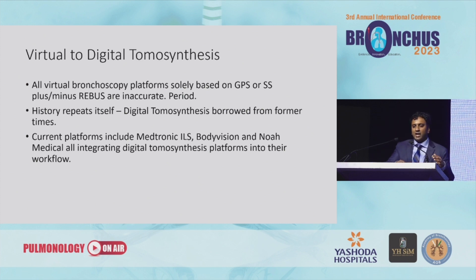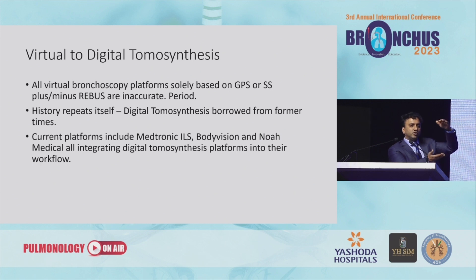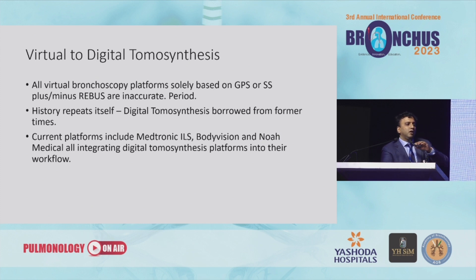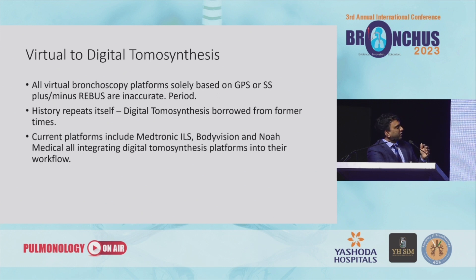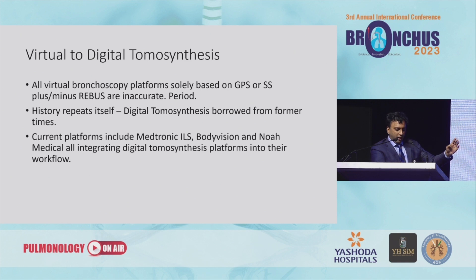With digital tomosynthesis, what's happening is you're doing a fluoroscopic sweep — taking multiple 2D images, stacking them, and then making images. The main thing to take away is that when we moved from virtual bronchoscopy to digital tomosynthesis, we're starting to correct for that CT to body divergence. And anybody who tells you that shape sensing has minimal or no CT to body divergence is wrong.